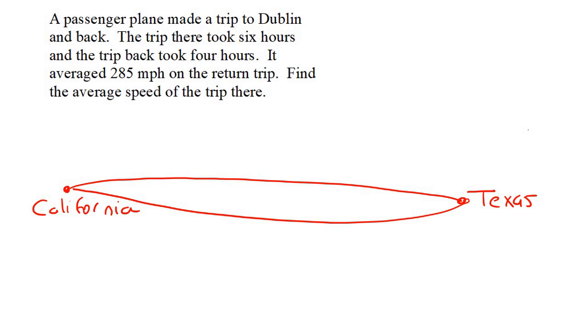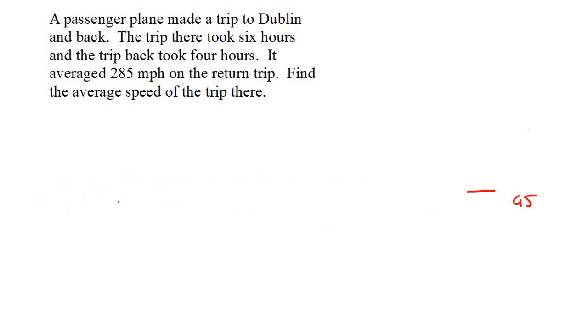And that is the key thing you must remember with these round-trip questions. So let's quickly read and see what this question is all about. A passenger plane made a trip to Dublin and back. The trip there took six hours and the trip back took four hours. It averaged 285 miles per hour on the return. Find the average speed of the trip there.